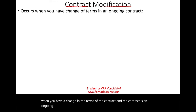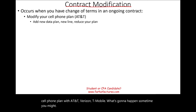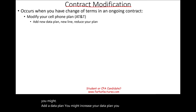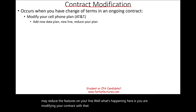The simplest example is a cell phone plan with AT&T, Verizon, or T-Mobile. You might add a data plan, increase your data plan, add a new line, or reduce features on your line. What's happening is you are modifying your contract with that service provider.